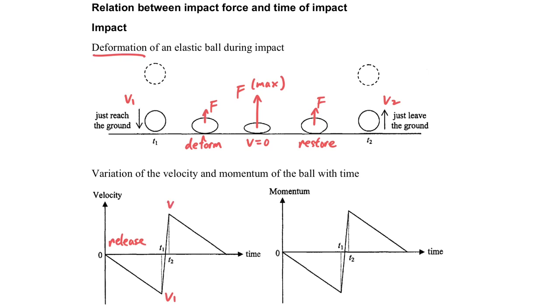So if we convert it to the velocity-time graph, we will observe the v1 and v2 in this way, and the time between these two speeds is the duration of impact.